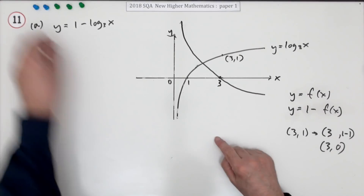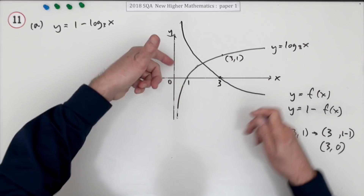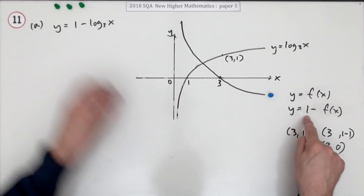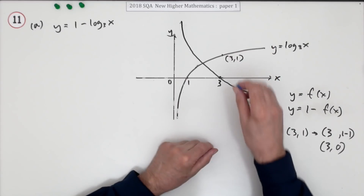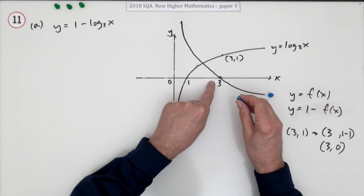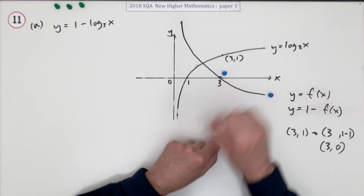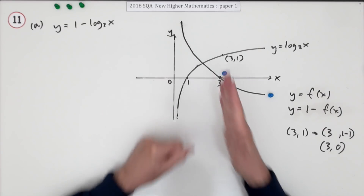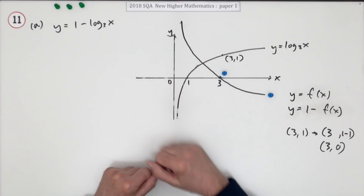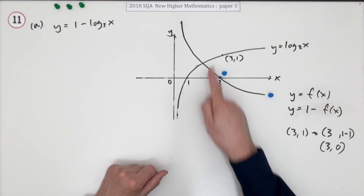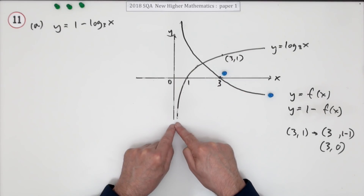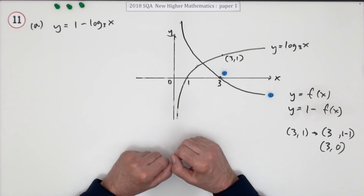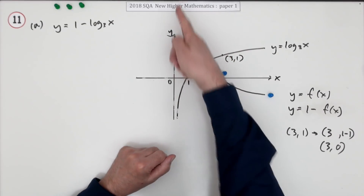There are two marks here: the first mark is for flipping it about the x-axis, and the second mark is for lifting it up 1 so it intersects the x-axis, showing that it intersects at x equals 3. Make sure this part doesn't cross over the y-axis — this line is meant to be an asymptote to the y-axis, getting as close as it likes without touching it.